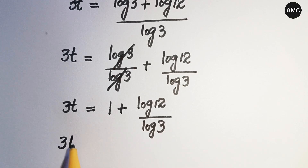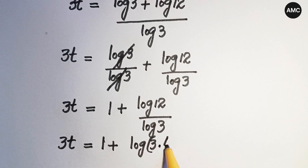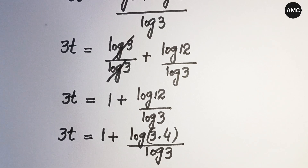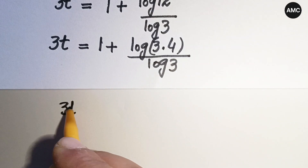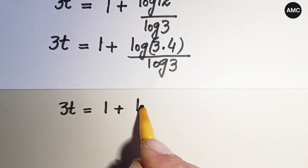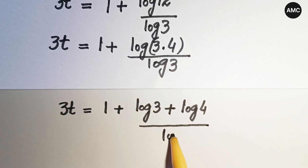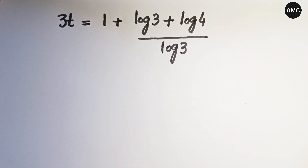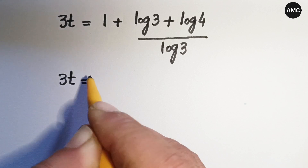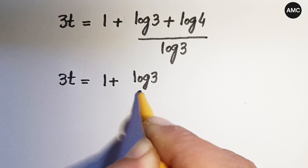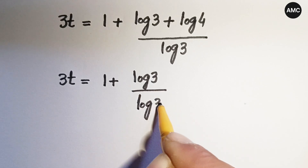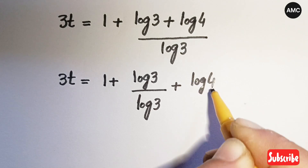The prime factors of 12 are 3 times 4, so 3t equals 1 plus log of 3 times 4 all over log 3. This can be written as 1 plus log 3 plus log 4, all over log 3. Writing the denominator separately under each term gives 3t equals 1 plus log 3 over log 3 plus log 4 over log 3.